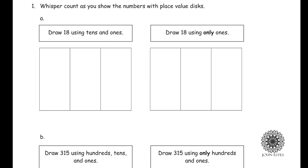First, it says draw 18 using tens and ones. We don't need any hundreds, so here are my tens and here are my ones. If I do this with tens and ones, I have one ten and then eight ones — that's a dime and eight pennies.